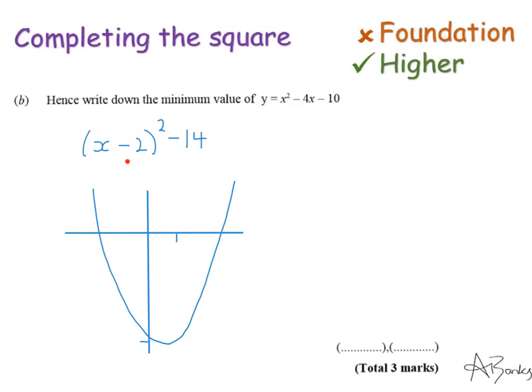If you know your transformations of graphs, if we have a minus 2 in the bracket with the x, it moves it two places to the right. So this here is actually positive 2, the opposite to what you have inside the bracket. The number on the end, the minus 14, will move the graph down by 14. So this value here is minus 14.